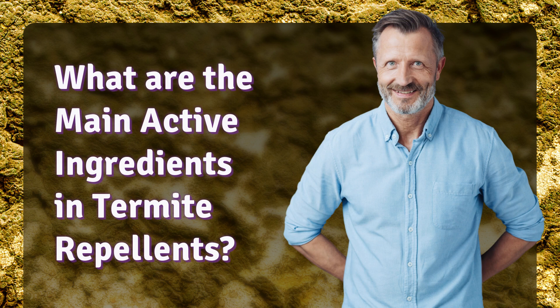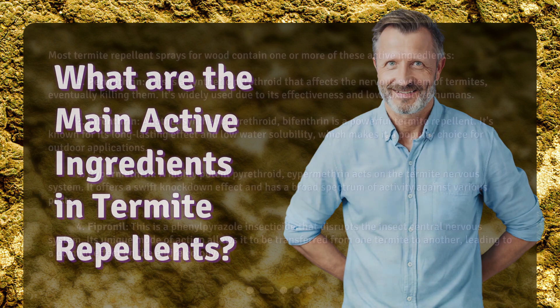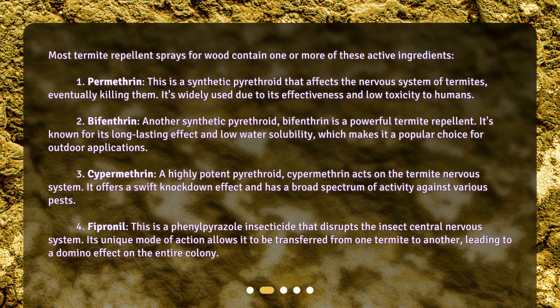What are the main active ingredients in termite repellents? Most termite repellent sprays for wood contain one or more of these active ingredients. 1. Permethrin — this is a synthetic pyrethroid that affects the nervous system of termites, eventually killing them. It's widely used due to its effectiveness and low toxicity to humans.